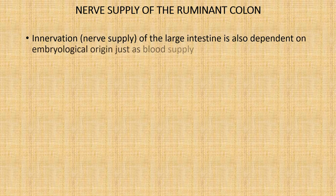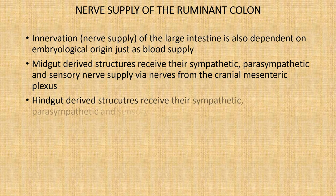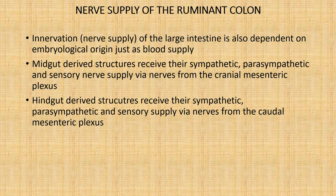Nerve supply of the ruminant colon comes from two plexuses: the cranial mesenteric plexus and the caudal mesenteric plexus. Just as with blood supply, innervation is also dependent on embryological origin. Midgut-derived structures receive their sympathetic, parasympathetic, and sensory nerve supply via the cranial mesenteric plexus, while hindgut-derived structures receive their supply via the caudal mesenteric plexus.